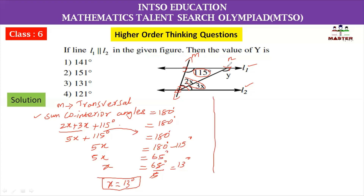Now we consider line N. The two parallel lines intersect at two distinct points, so line N is also a transversal. If we look at the angles on the same side of the transversal, we consider the co-interior angles. For line N, the co-interior angles are Y and 3X.